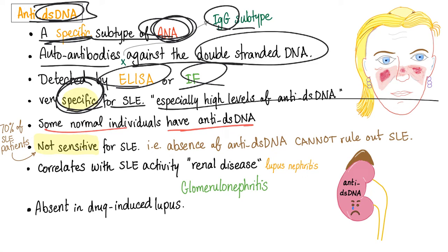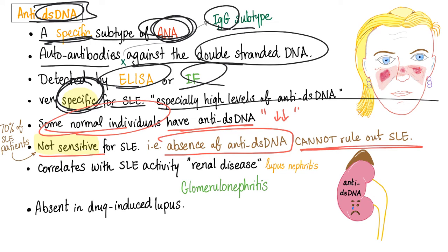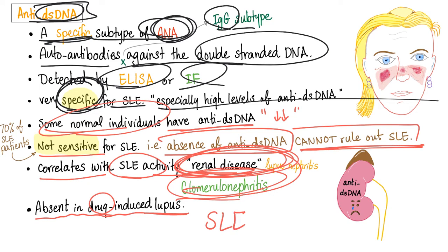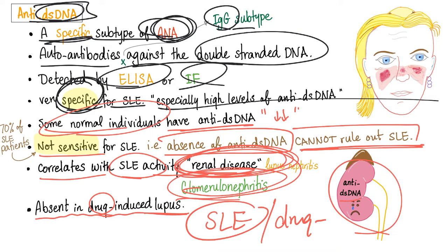However, some normal individuals can have anti-double-stranded DNA at low levels, which makes the test less sensitive. It cannot rule out lupus, but it can certainly rule it in. It correlates with SLE activity, specifically renal disease. If you have lupus and anti-double-stranded DNA, you are more likely to develop lupus nephritis — a glomerulonephritis. Anti-double-stranded DNA is absent in drug-induced lupus; do not confuse systemic lupus erythematosus with drug-induced lupus — they are not the same.